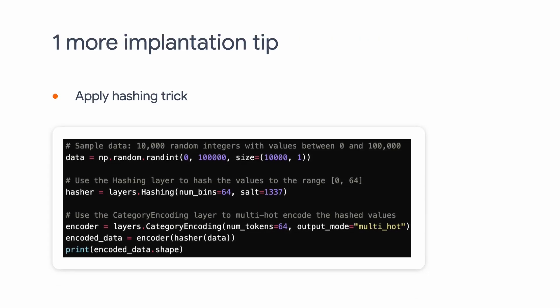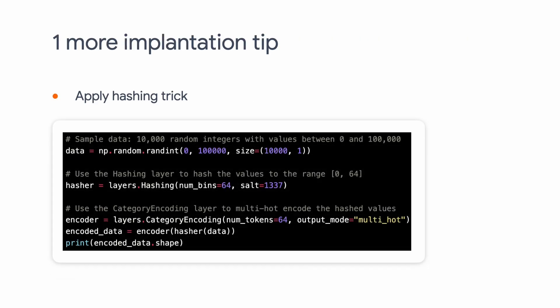Before we wrap up today, I want to mention one more implementation tip: the hashing trick. The idea is to apply a hashing function to the user and item IDs so that the vocabulary can accommodate new users or items that come in after your model is trained and deployed. Keras has a built-in hashing layer specifically designed for this, so it's pretty straightforward to apply. Feel free to check out the link to learn more.